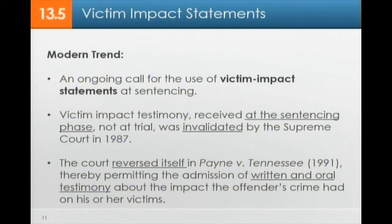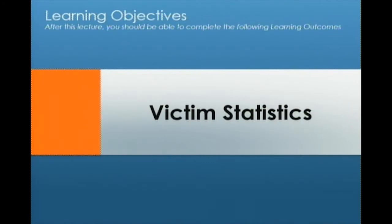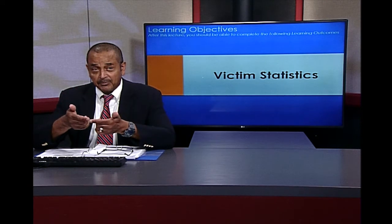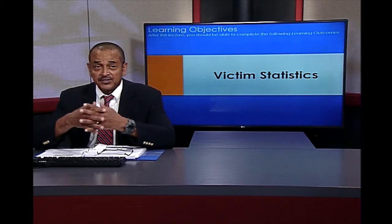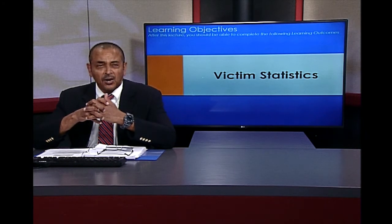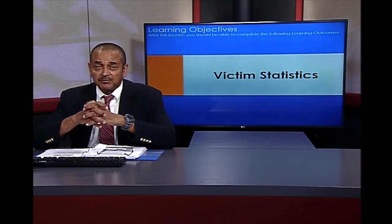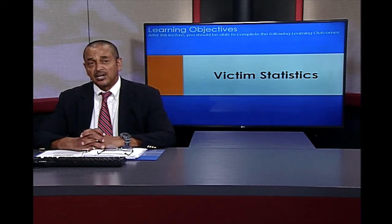Victims' impact testimony, originally received at the sentencing phase, was invalidated by the Supreme Court, but the Court reversed itself, thereby permitting the admission of written and oral testimony about the victim and the impact of the offender's crime on his or her victims. The victim's impact statement can be very moving testimony — for example, the parents of a child victim — and can have a dramatic effect on the judge and the court.